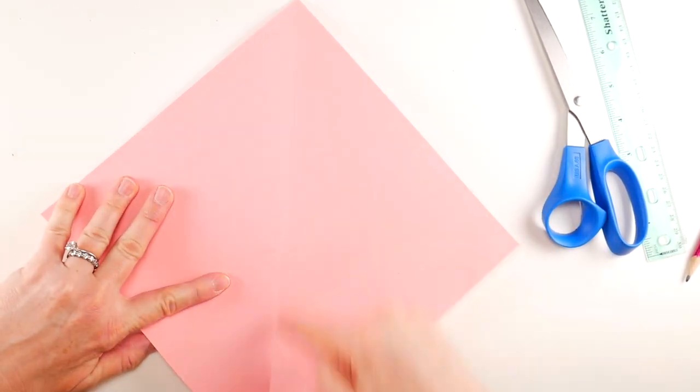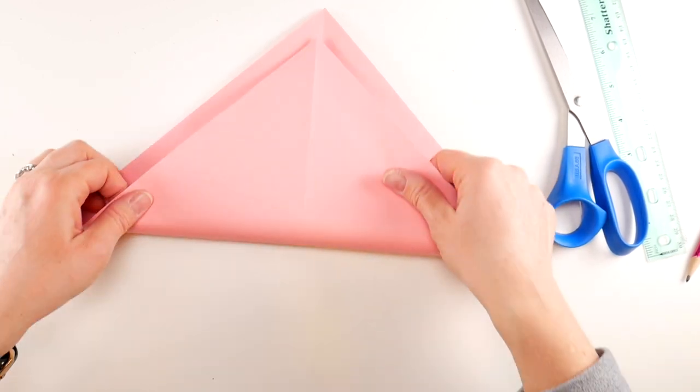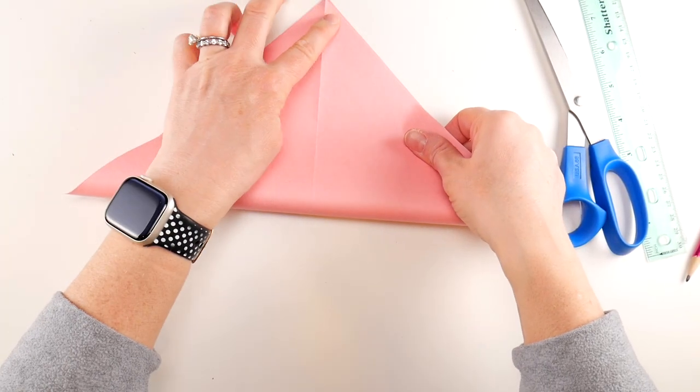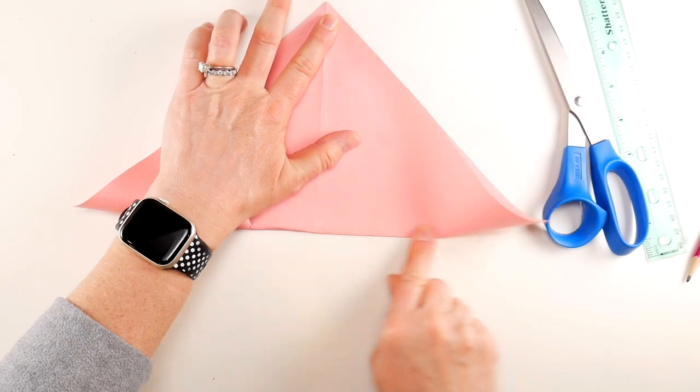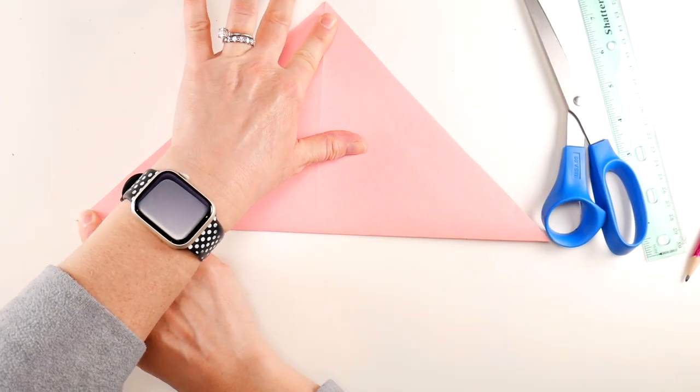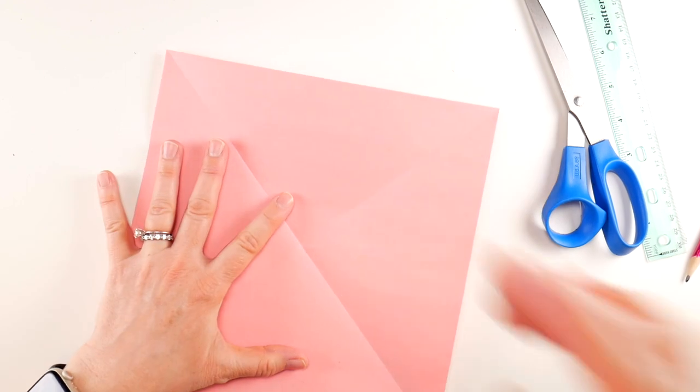Now open it back up and we're going to fold the opposite way. You have a vertical line, now we're going to fold it this way. Take that bottom point, bring it up to the top, and crease it really nicely, nice and neat and sharp. Then let's open it back up.